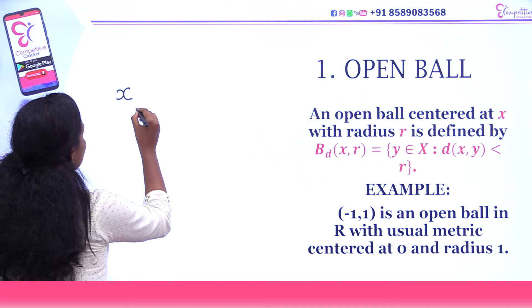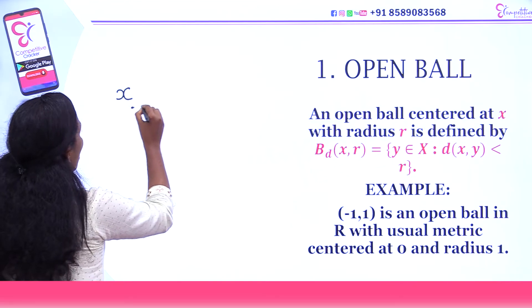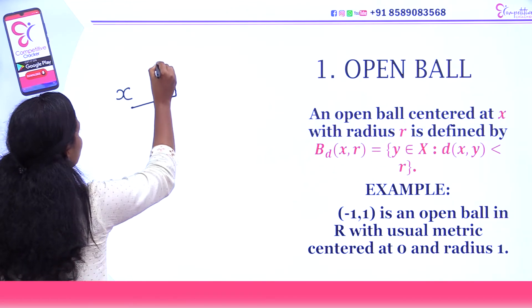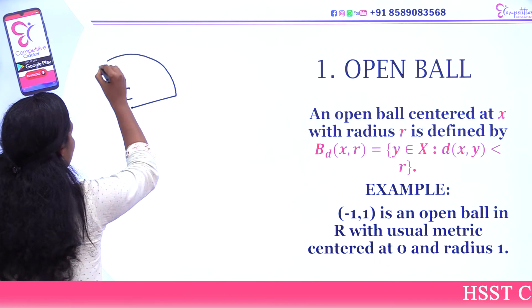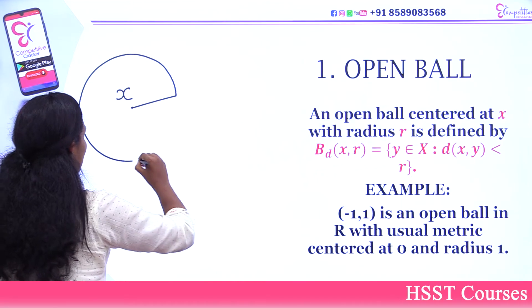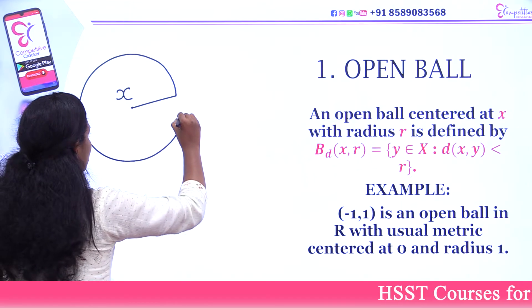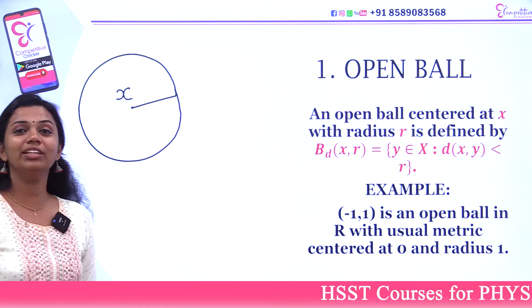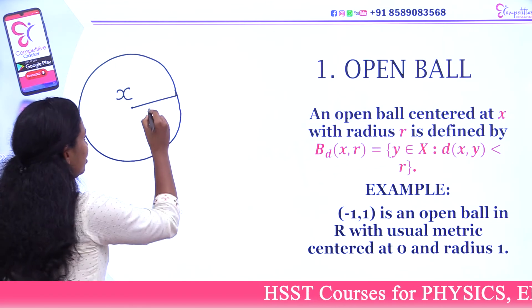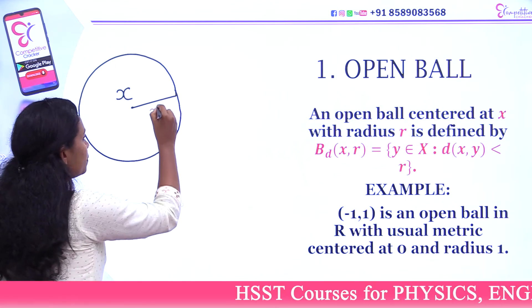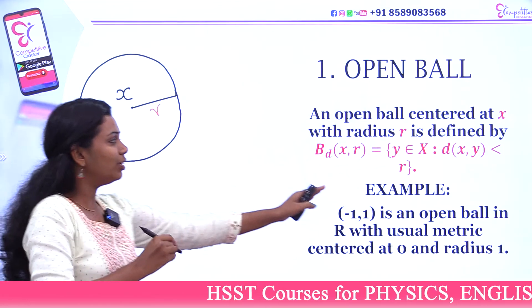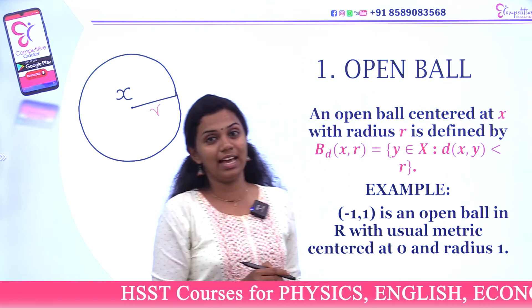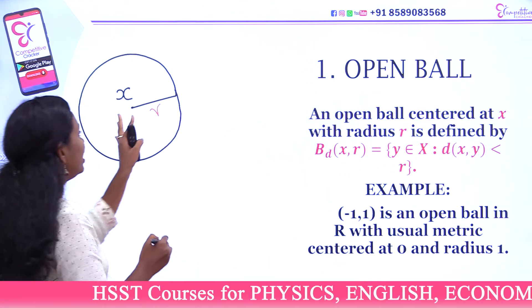This is a ball centered at x with radius r. And d(x, y) is strictly less than r.